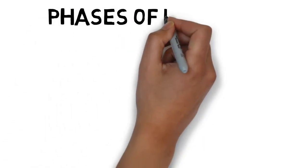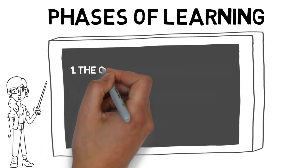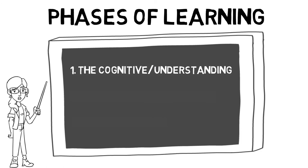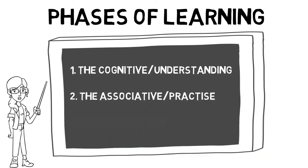As we learn, we go through different phases of learning. The cognitive or understanding phase has inconsistent results and still relies on coaching cues. The associative or practice phase has more consistent results, with more complex elements requiring more work.